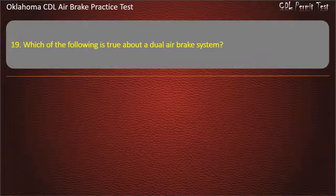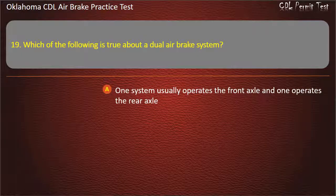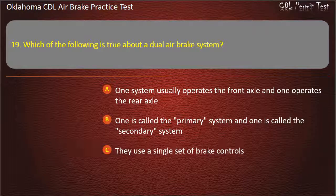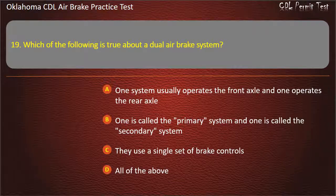Question 19. Which of the following is true about a dual-air brake system? One system usually operates the front axle and one operates the rear axle; one is called the primary system and one is called the secondary system; they use a single set of brake controls; or all of the above. Answer: All of the above.